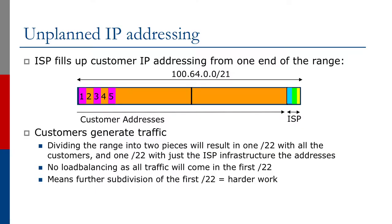If the customer is using NAT, then they will be NATing onto the point-to-point link address from the service provider to them. If we don't do any planning with the IP address space and simply consider our address block as a long tube, just filling up the tube from the left-hand side as the diagram shows, the traffic engineering is not really going to work.